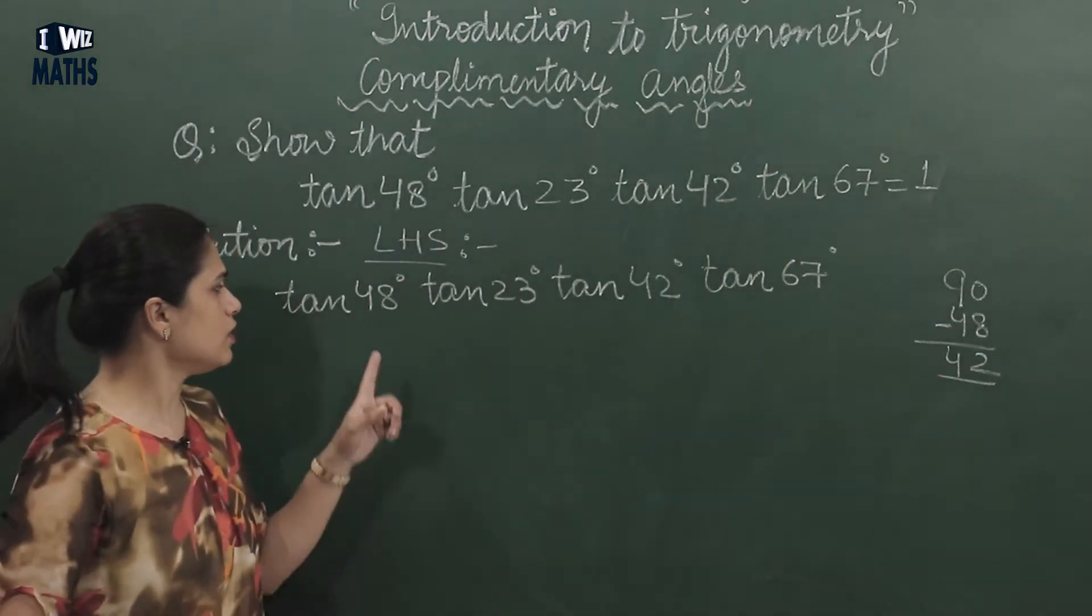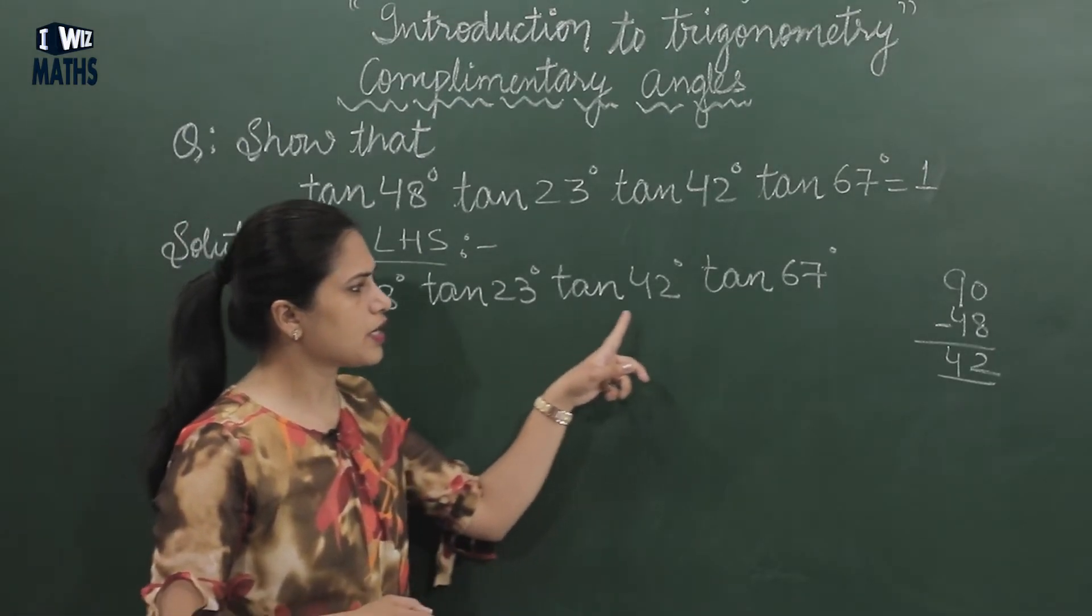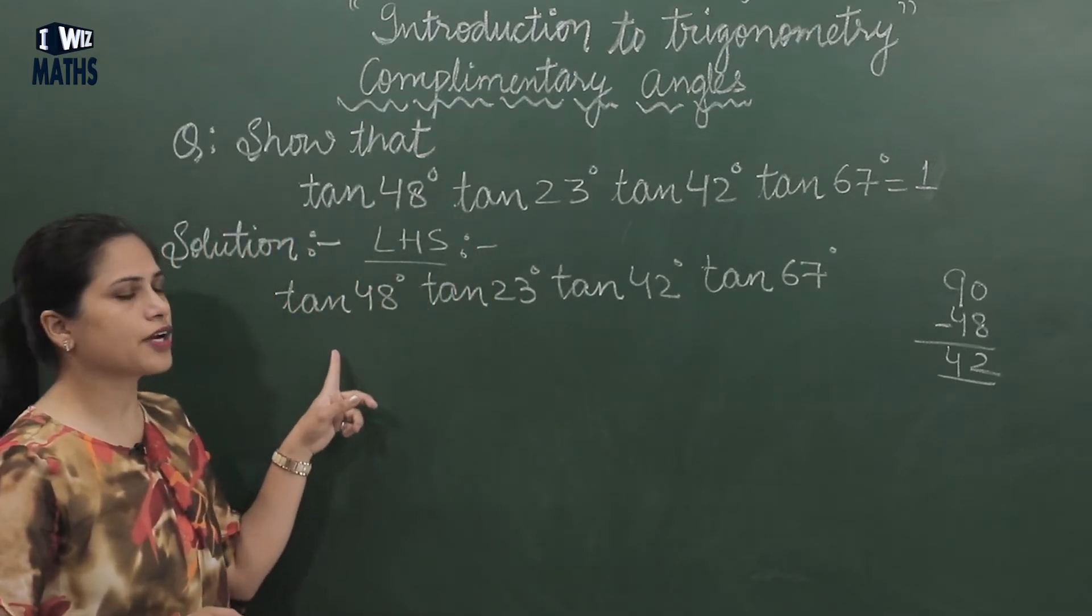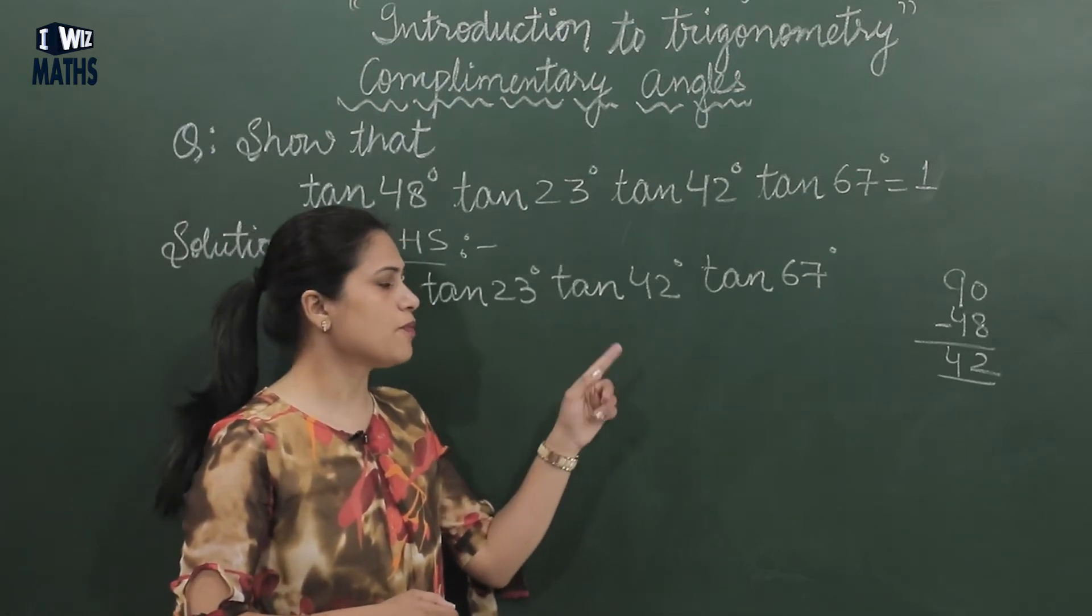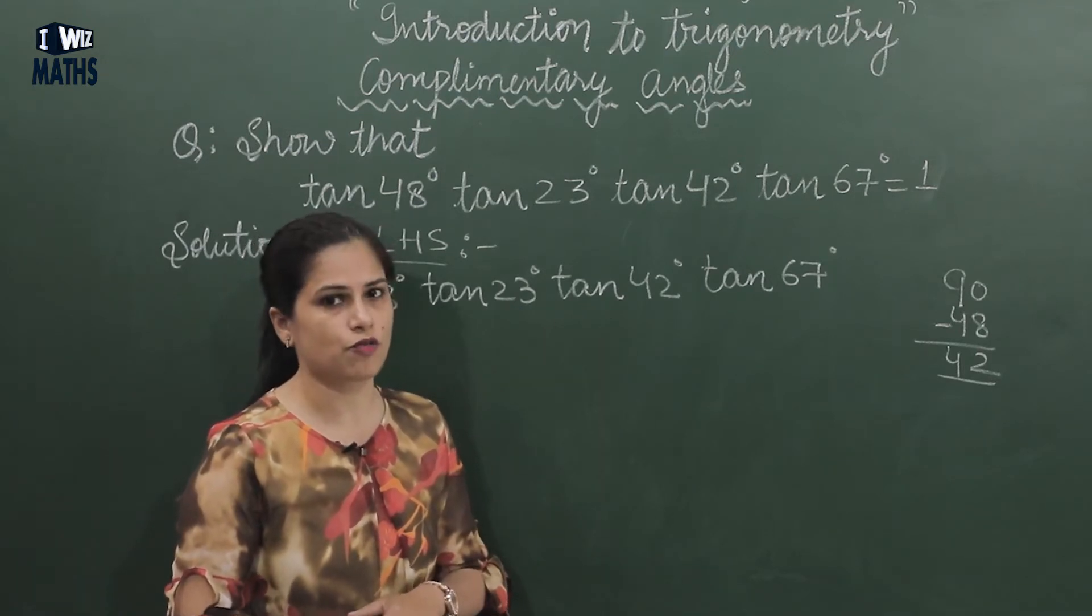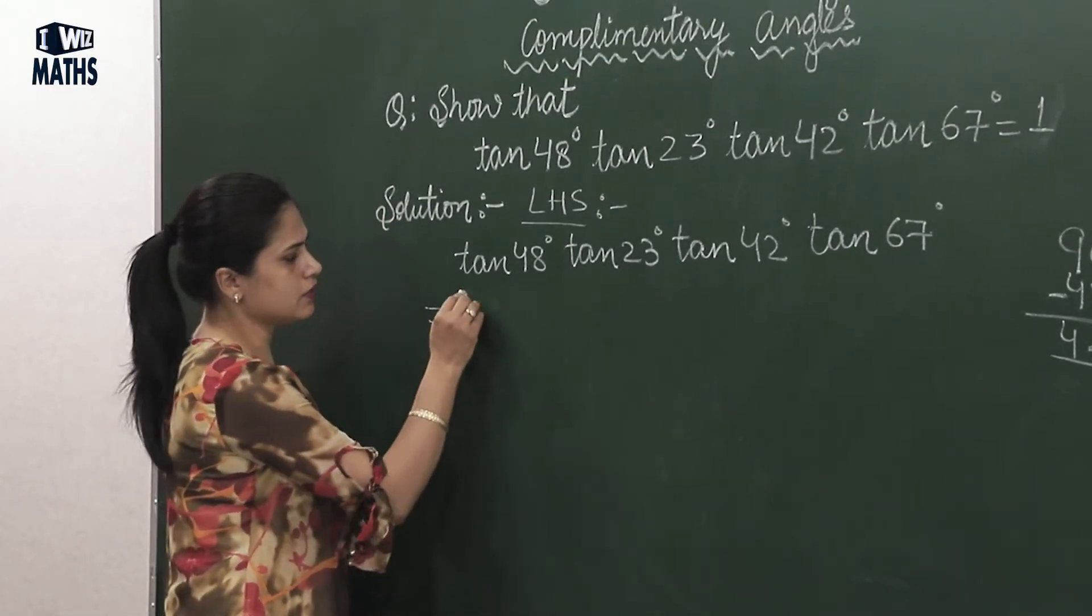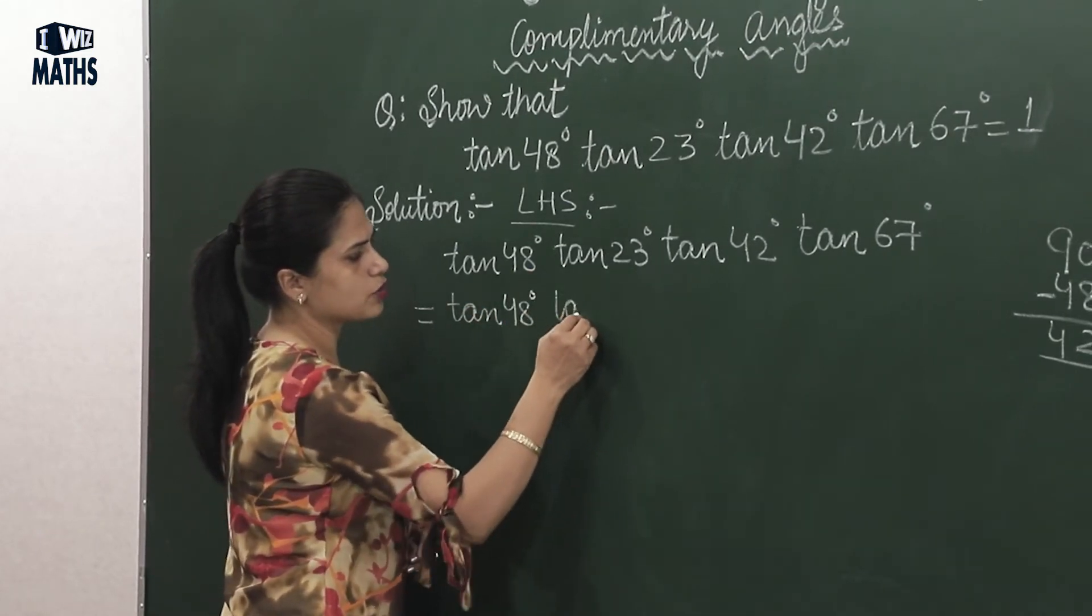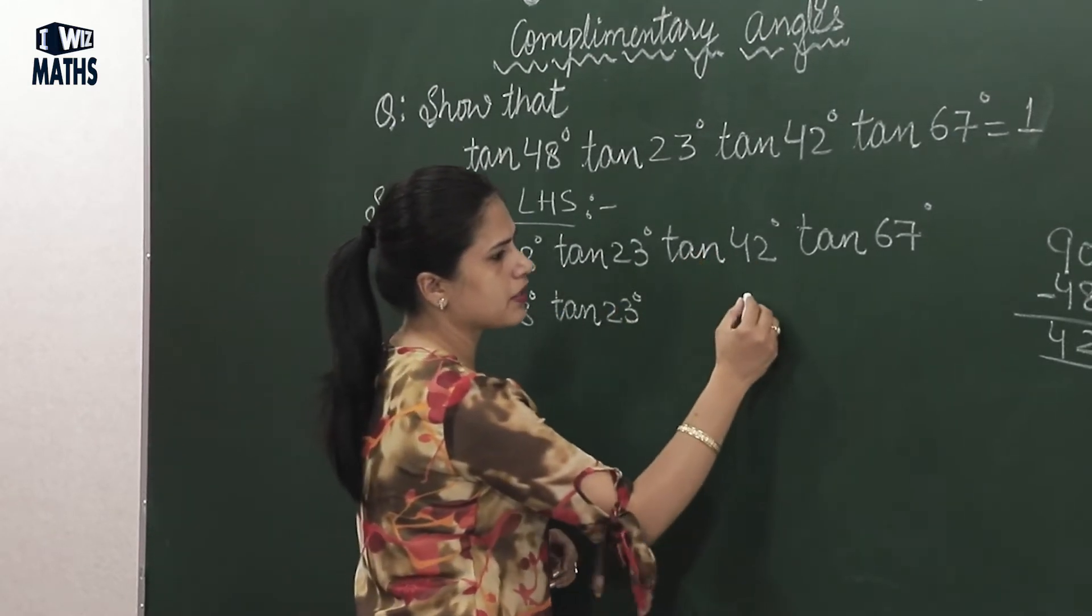This means the complementary angle of 48 is 42, and that you'll find somewhere here, and you can see it's here. So what will we do? We'll write tan 48 as it is, and for tan 42, if we need complementary, we'll take the complementary function. And we know that tangent's complementary function is cot. So I'll replace it with equal sign: tan 48°, I'll write it as it is, tan 23°.